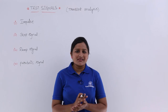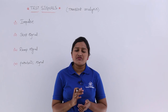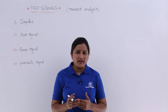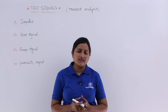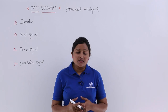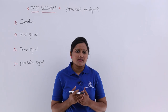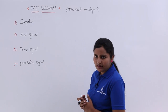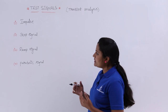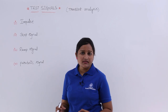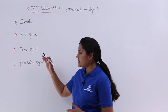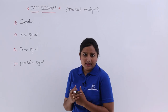In this video we are going to discuss the test signals in transient analysis. We have two types of analysis: transient analysis and steady state analysis. When doing transient analysis you need to know about the test signals. In signals and systems, impulse and step are the best test signals to test any system. Here we are adding two more signals: ramp signal and parabolic signal as test signals.